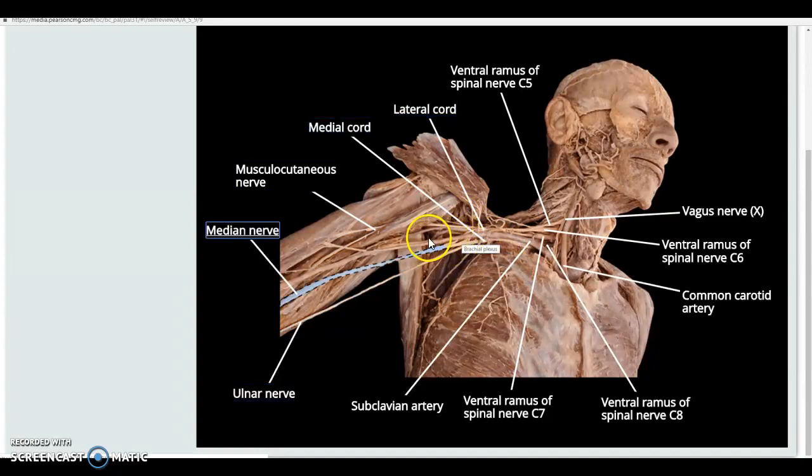With the musculocutaneous nerve coming off the M all the way over there, going out to the biceps muscle, the median nerve going down the middle to those wrist and digital flexors, and the ulnar nerve going all the way down to the end of the limb.